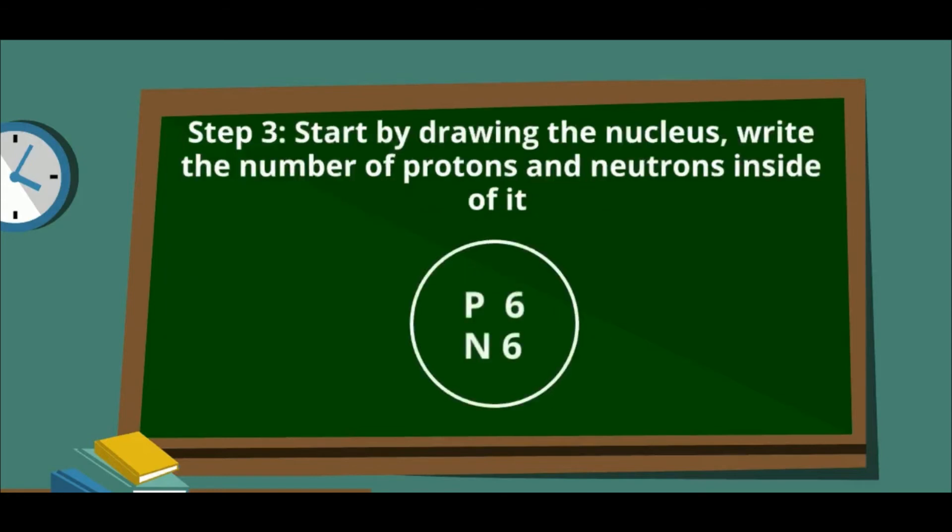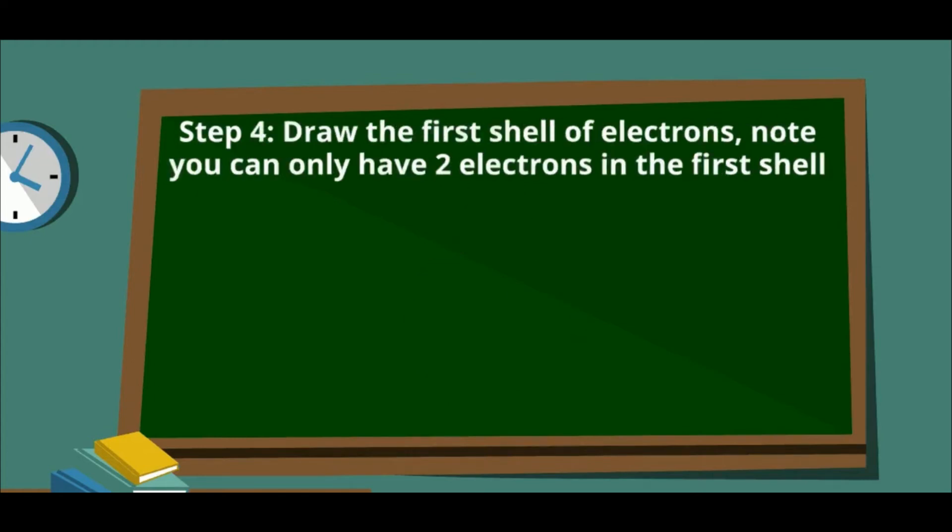To start off our diagram, we draw a circle for the nucleus and write our protons and neutrons inside of it. To place our electrons, first we need to draw our first shell. In our first shell, we can only have two electrons.